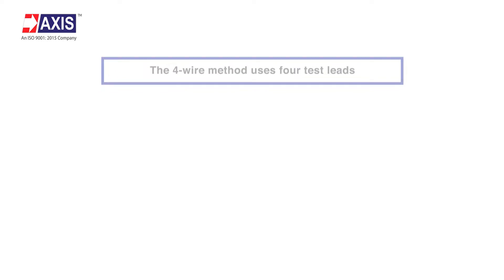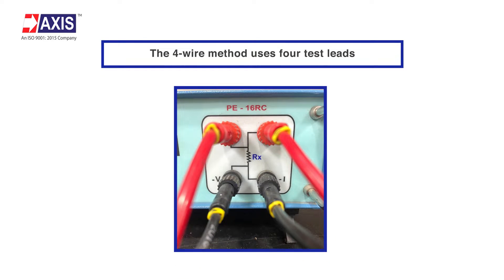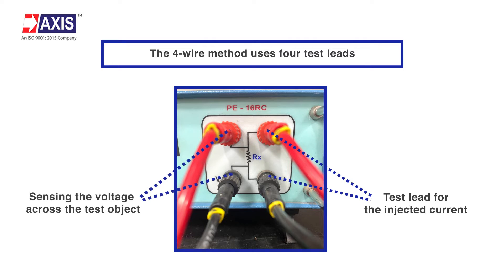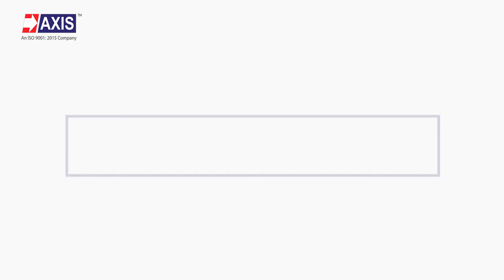The four-wire method uses four test leads: one pair of test leads for the injected current and the other pair of test leads for sensing the voltage across the test object. It has a range of a few micro ohms to several kilo ohms.